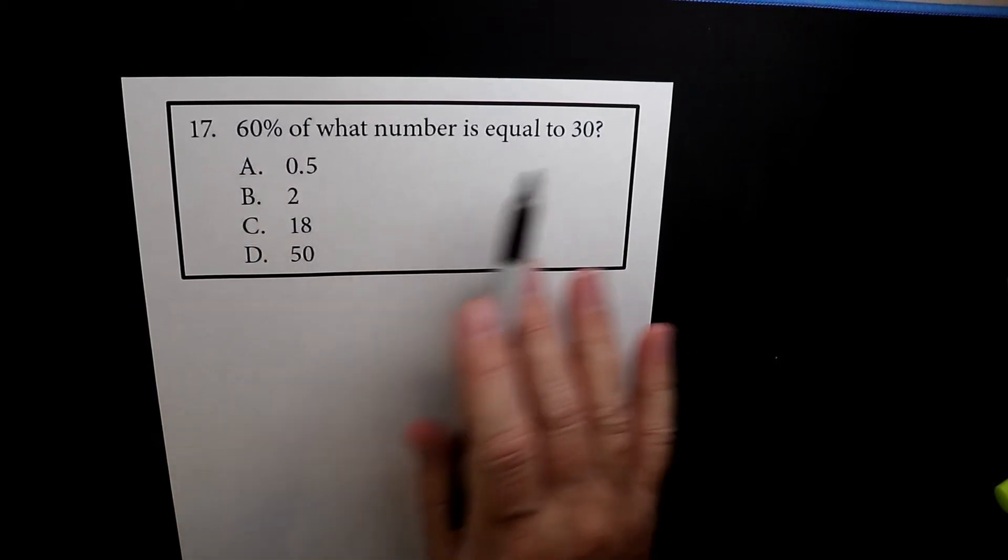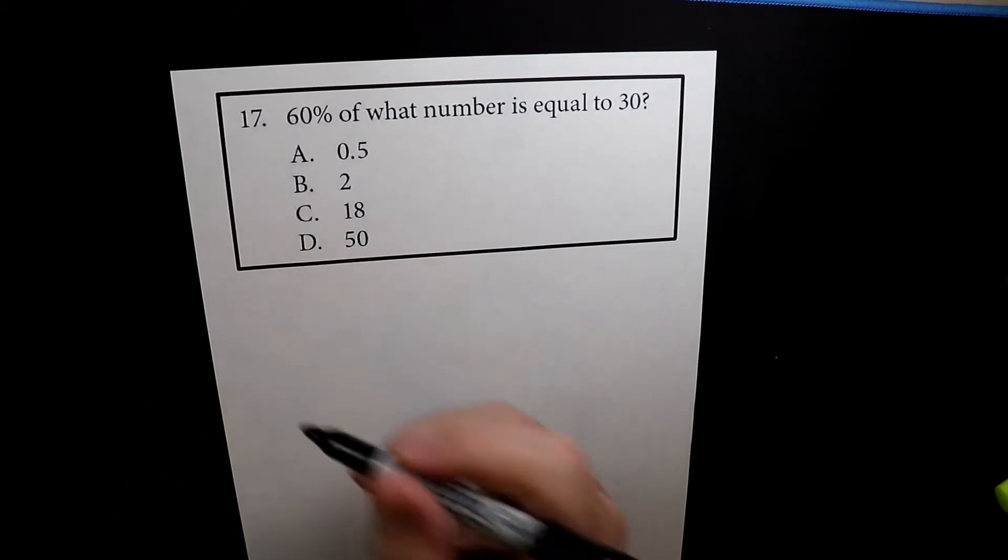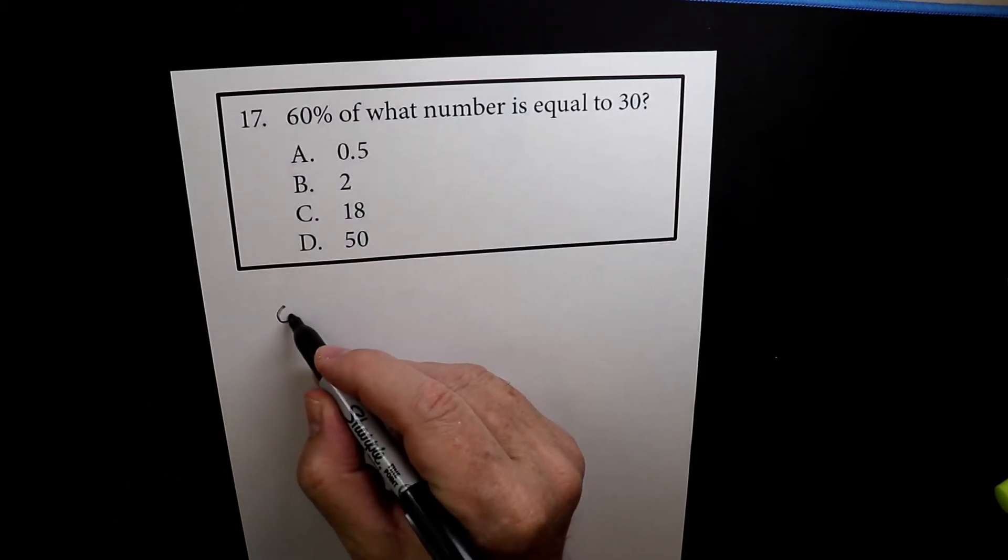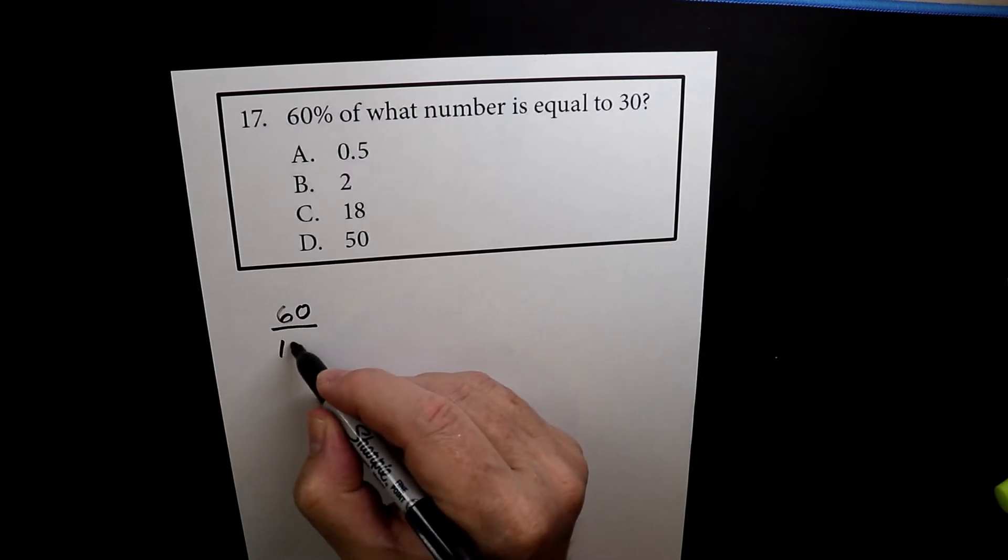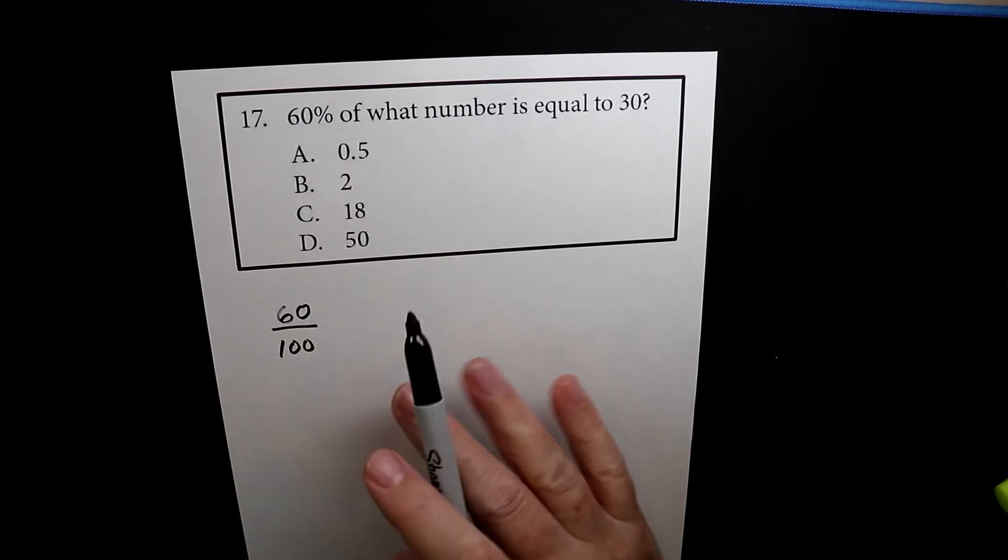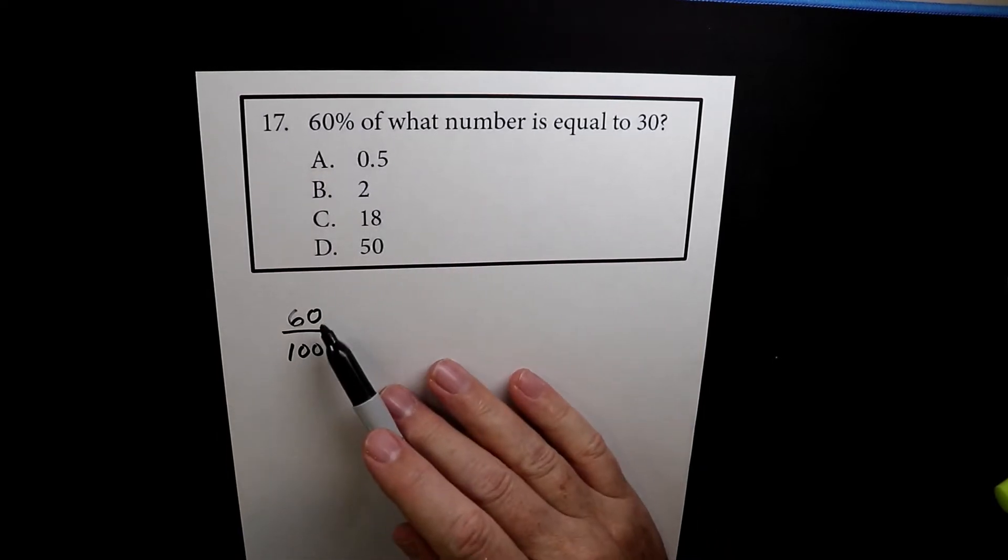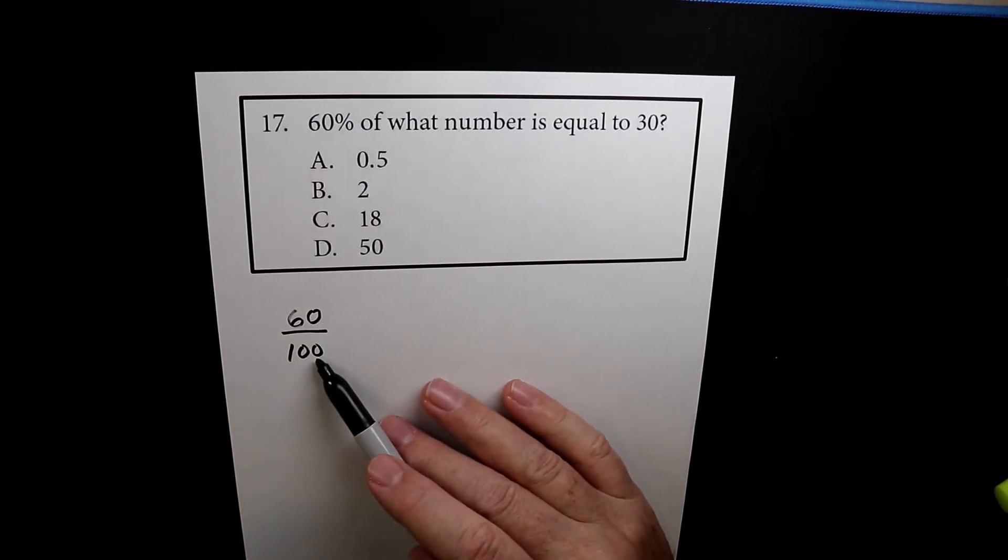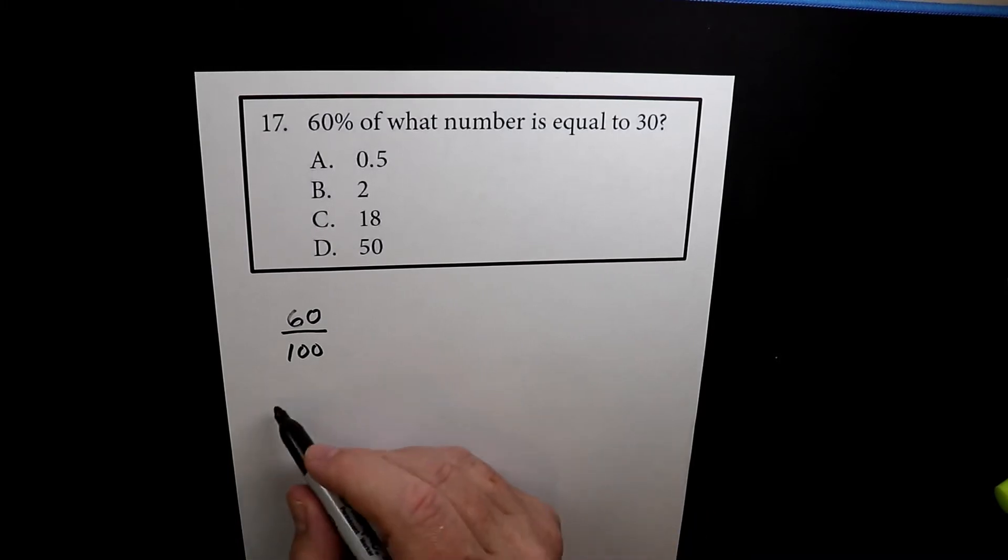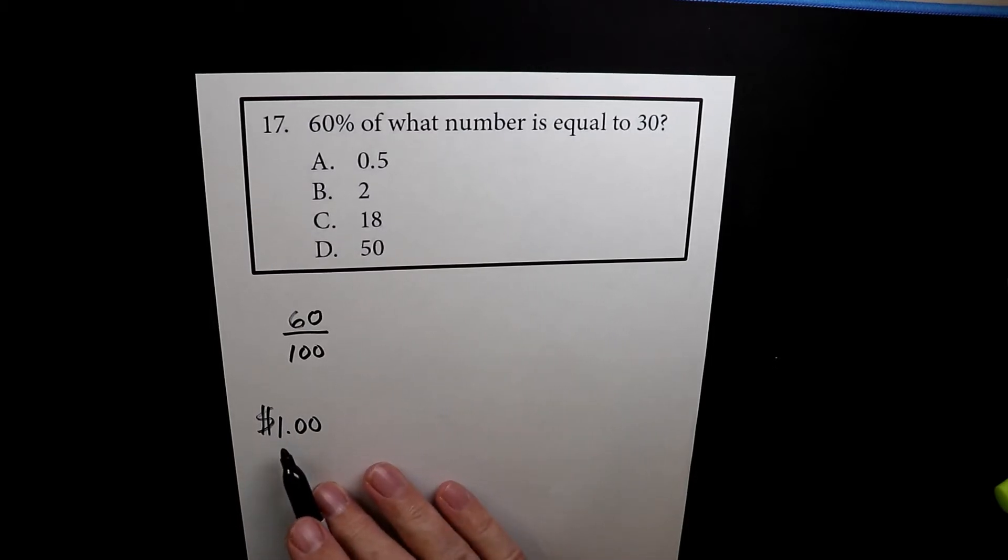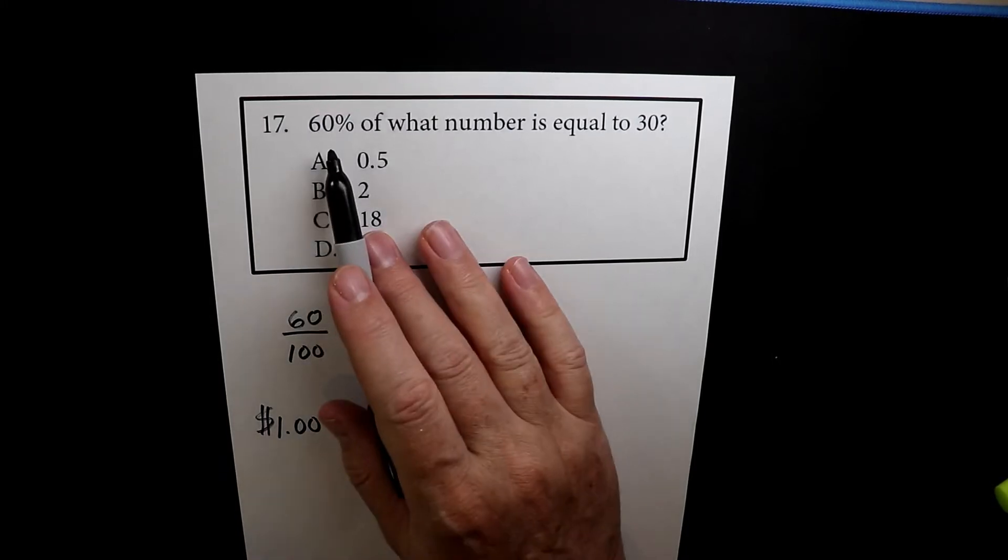So they're asking you to set up a proportion here. Let's set it up this way. So we're saying that 60 over 100. Now let me explain what that means, that 60% equals 60 over 100. And the way I want you to think about this is if this was a dollar bill and you had 60% of a dollar bill, that would go to $0.60. So this is the fraction. This is the decimal conversion of this.